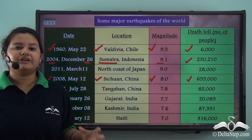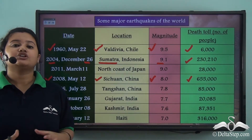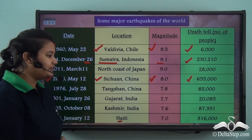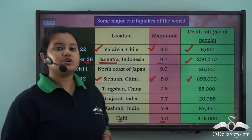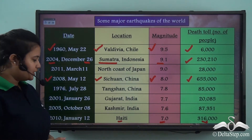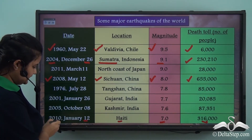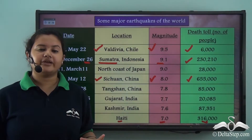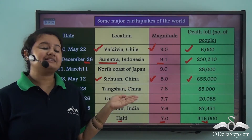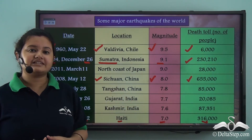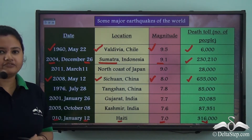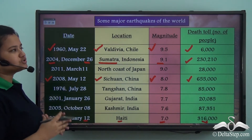A most recent fatal earthquake took place in Haiti of 7.0 magnitude, which took away more than 300 thousands, occurring on 12th January 2010. Earthquakes also occurred in India of magnitude 7.7 and 7.6 in the states of Gujarat and Kashmir respectively. You can now pause the video and give a close look at the chart.